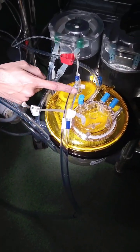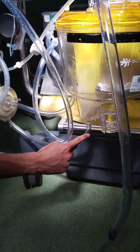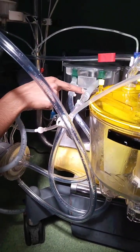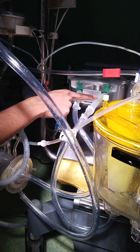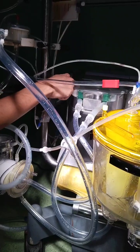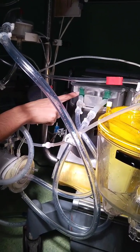Venous blood comes into the reservoir. From the reservoir, it will go down to the venous reservoir outlet, travel like this, and go into the pump boot. This pump boot rotates anti-clockwise, so the blood will go from this side in an anti-clockwise direction and get pushed out from the pump boot.